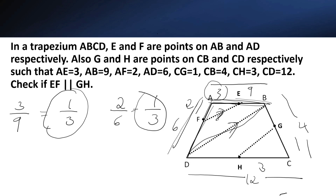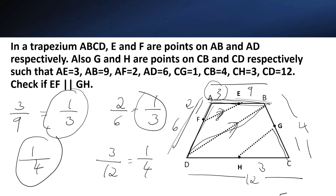Now let us check CG/CB = 1/4, and CH/CD = 3/12 = 1/4. So CG/CB is equal to CH/CD. Therefore GH is parallel to BD. Since EF is parallel to BD and GH is parallel to BD, EF is parallel to GH. Hence proved.